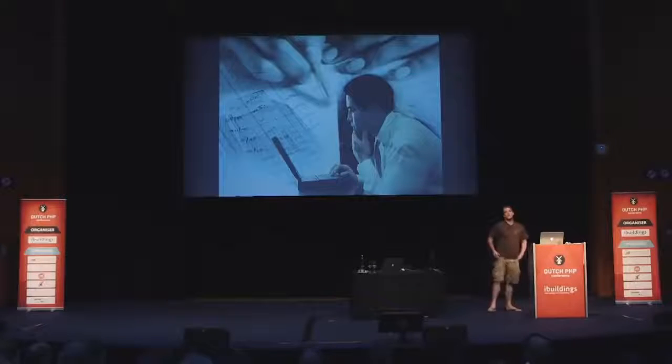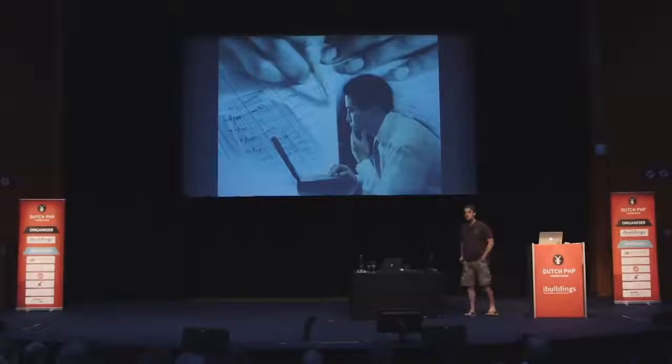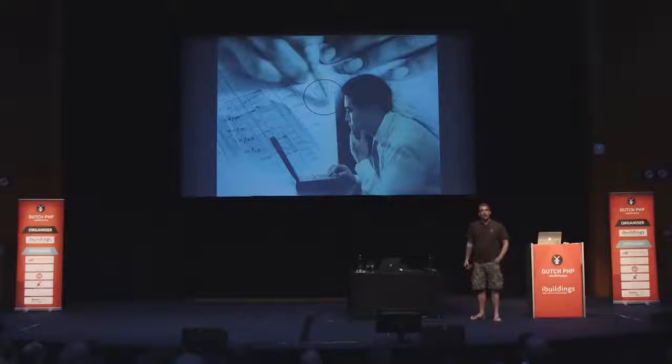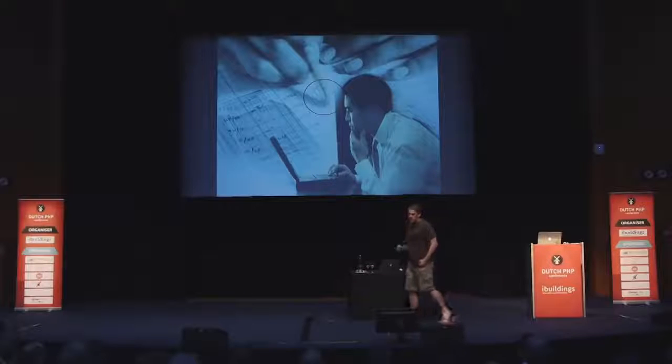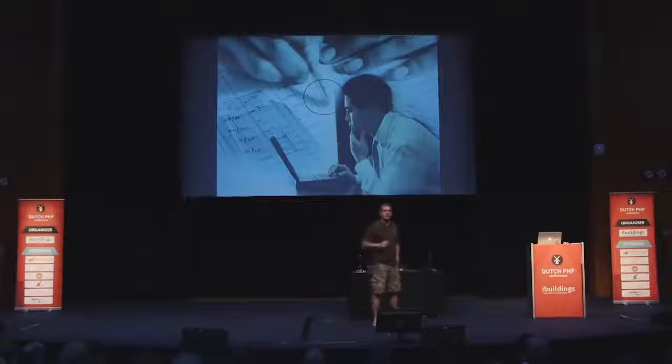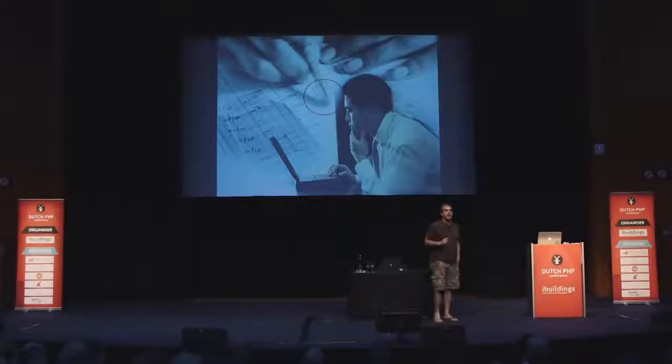There's a big problem: accountants don't erase stuff in the middle of their journals. This does not happen — well, maybe at Enron. If you took an accounting class in university, you might have had a teacher who said accountants use pens, not pencils. You don't erase things in the middle of your journal. You can learn everything you need to know about event sourcing by talking to an accountant.